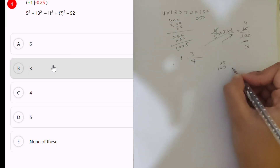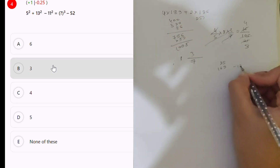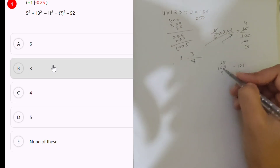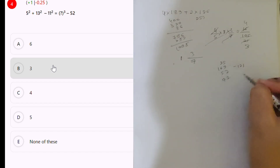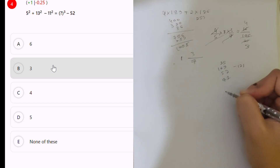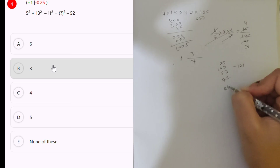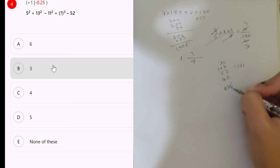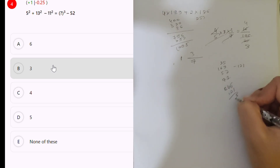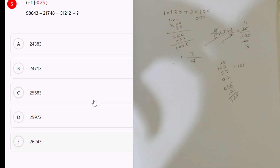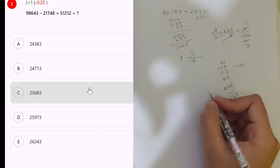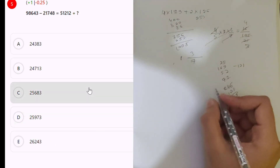Five squared is twenty-five and one sixty-nine, minus one twenty-one, plus fifty-two. So fifty-two, seventy, seventy-seven, that is two hundred and twenty, two hundred and thirty, two hundred and forty-six minus one twenty-one. Five and two and twenty-two, ninety-five. So x cube answer: nine, eight, six, four, three.